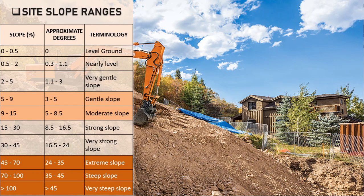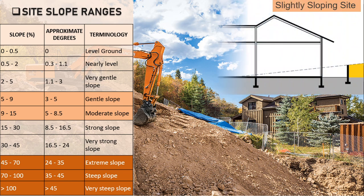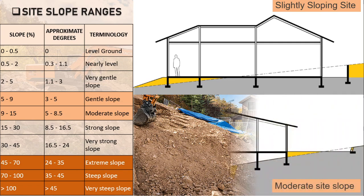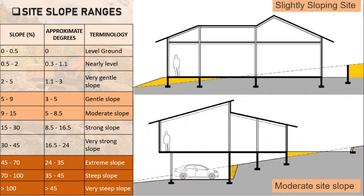Site slope ranges. We have the slope as a percentage, approximate degrees, and the associated terminology. From 0 up to about 5%, or from 0 up to 3 degrees, we are looking at level ground and very gentle slope. Between 5 and 15%, around 3 to 8.5 degrees, you are looking at moderate side slopes.